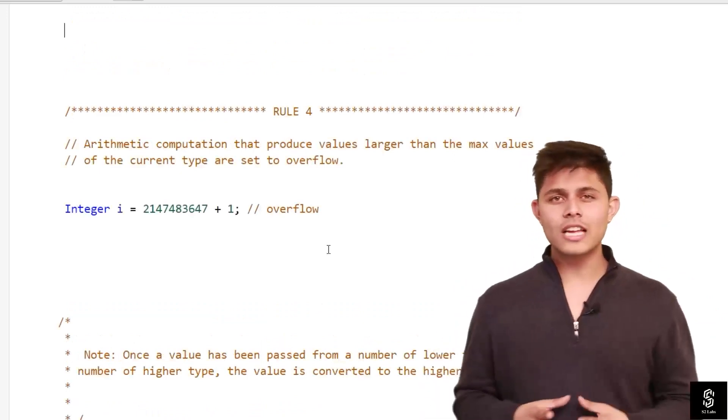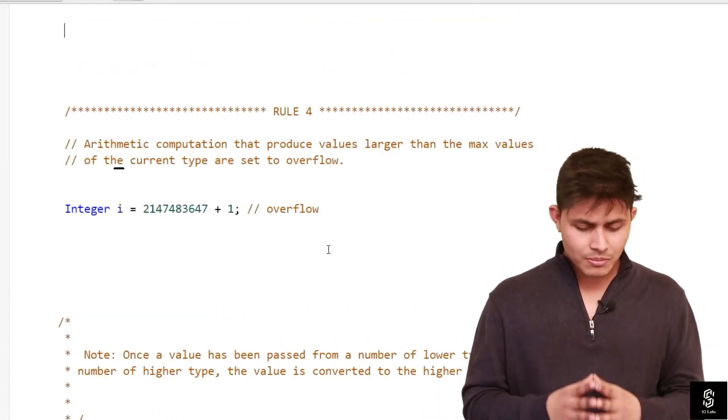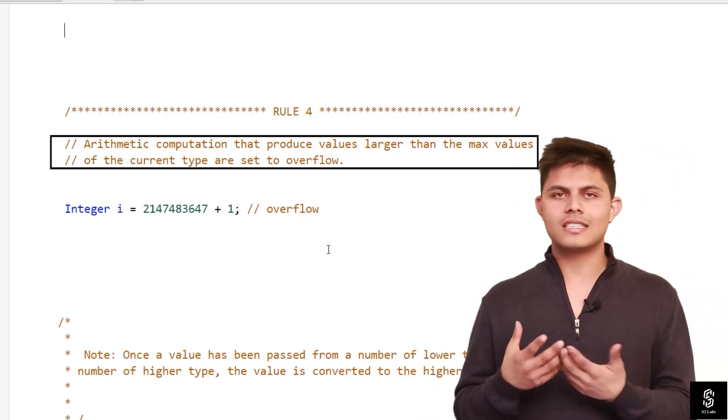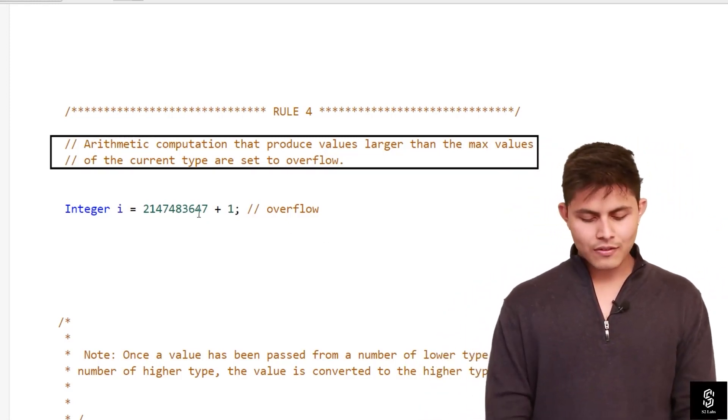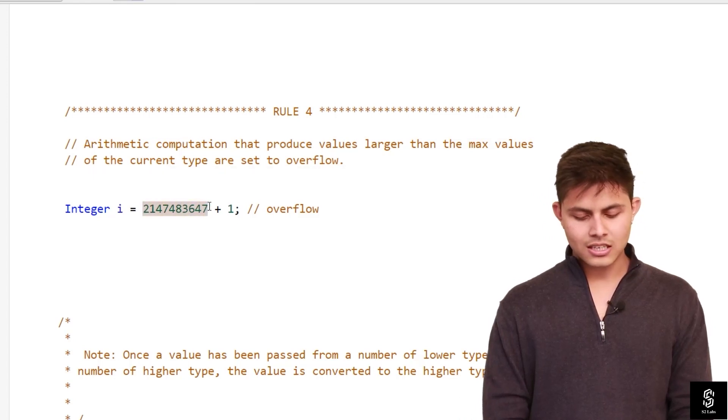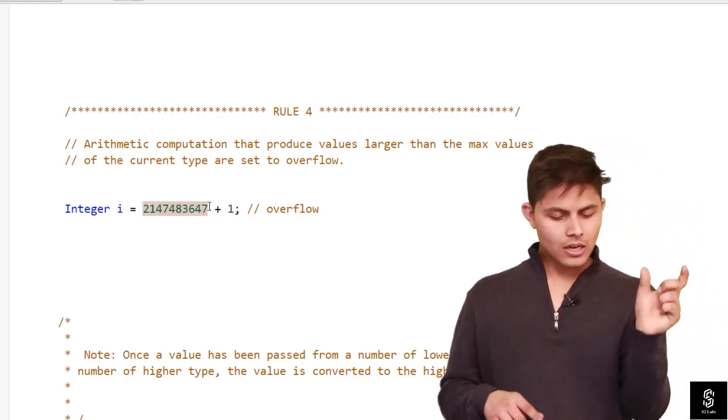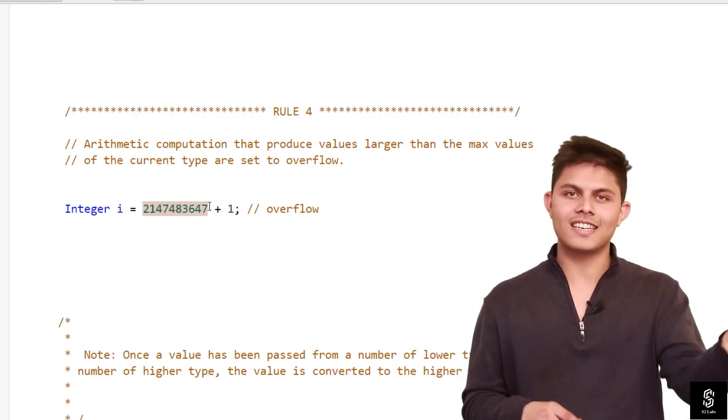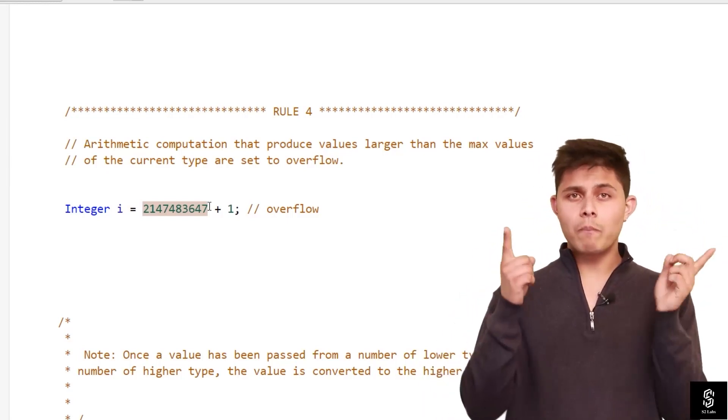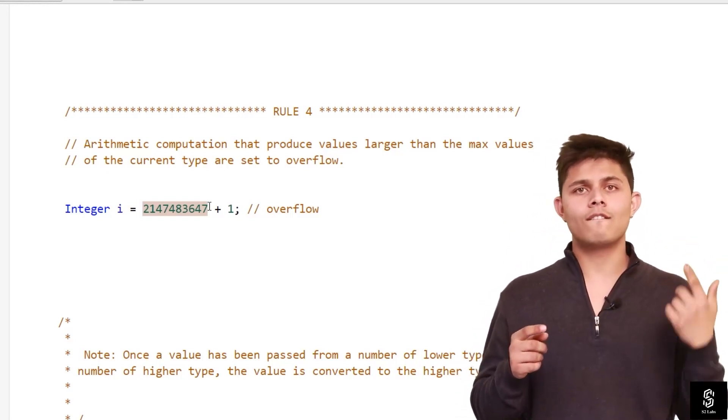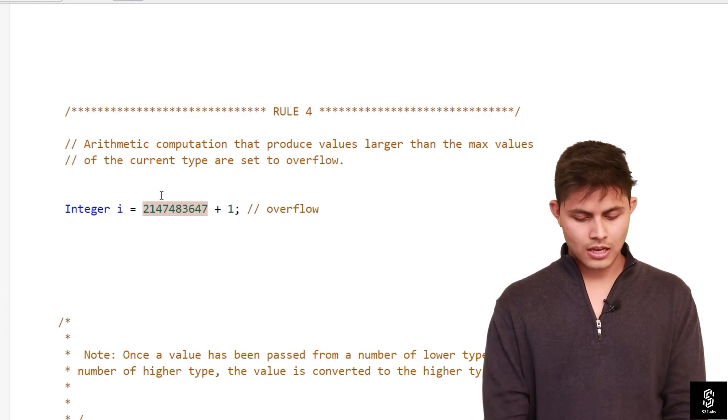The last rule that we have to focus on is arithmetic computation that produces values larger than the max values of the current type are set to overflow. It's exactly similar. Here I have written down 2147483647 and plus one. So 2147... whatever it is, it's an integer. One is also an integer. But the addition of both of them is not resulting in an integer value. So if you try to store it into an integer variable,